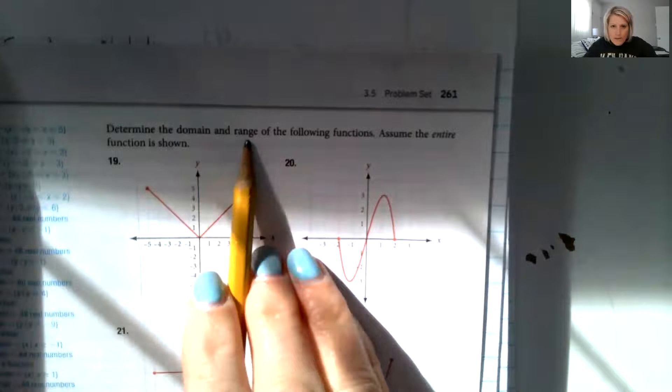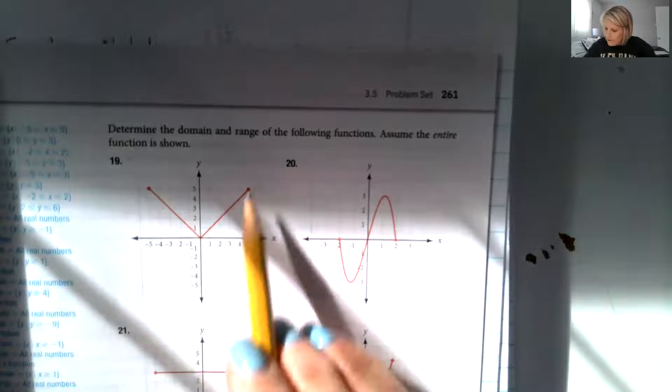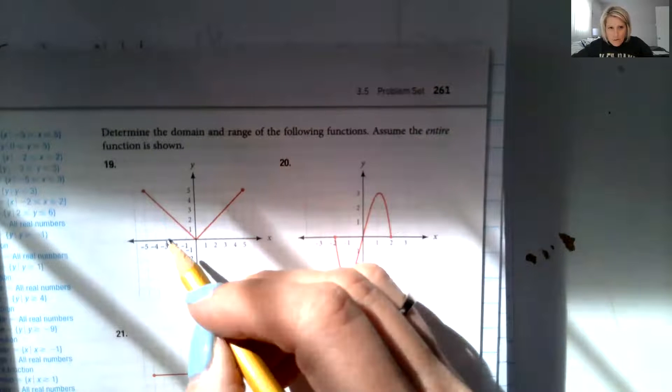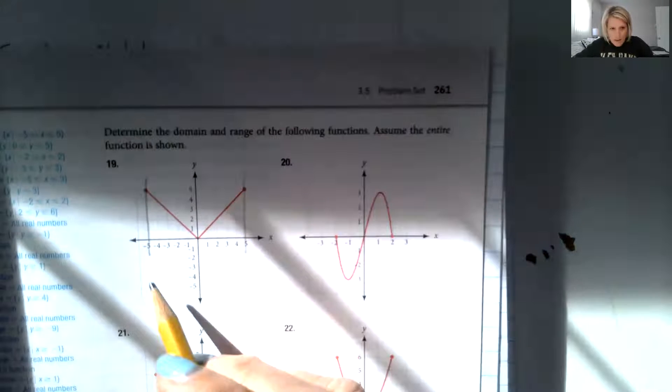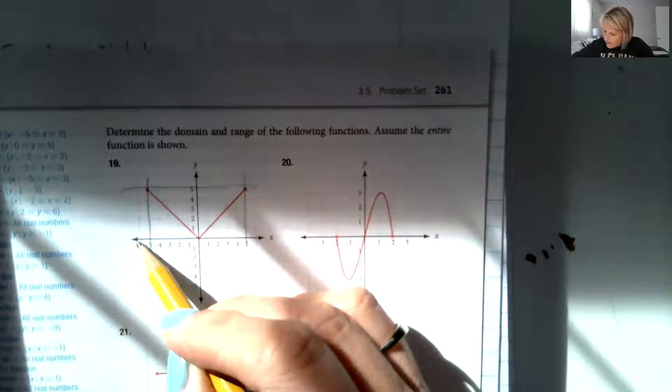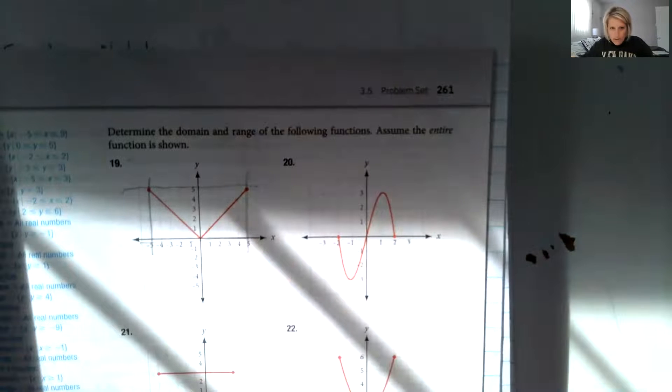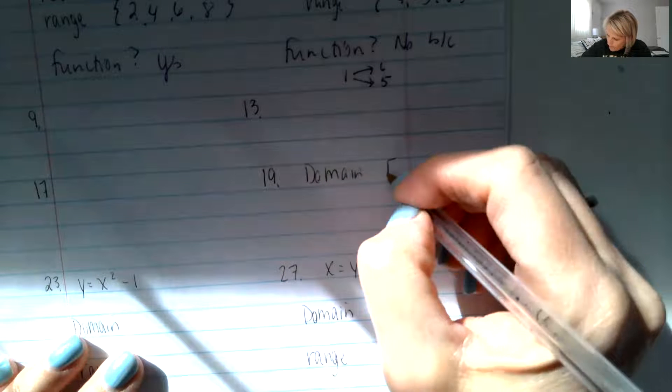So 19 says, determine the domain and range of the following functions. Assume the entire function is shown. So this is the entire function 19. So the domain are, what are my x values allowed? And then, what are my y values that are going to come out of that? So my x values go from negative 5 to 5.